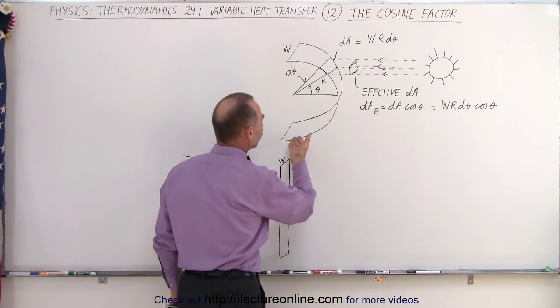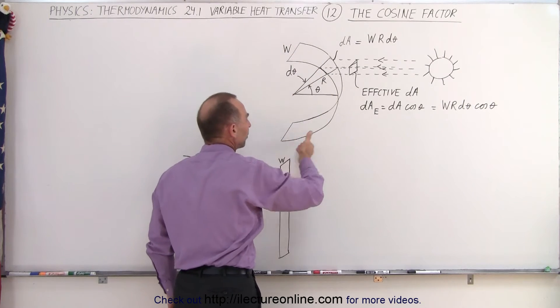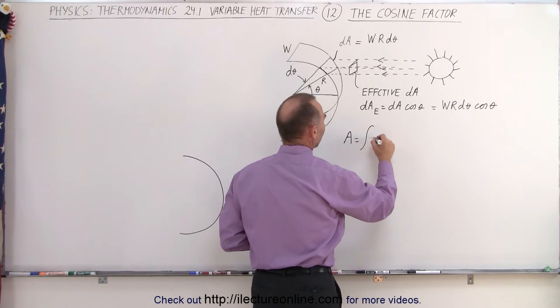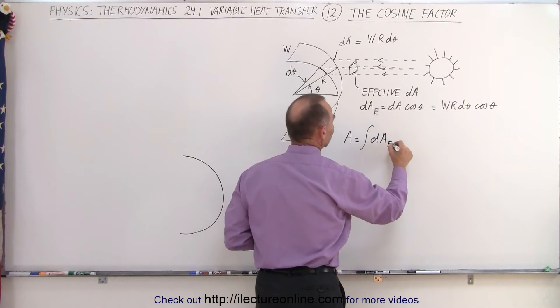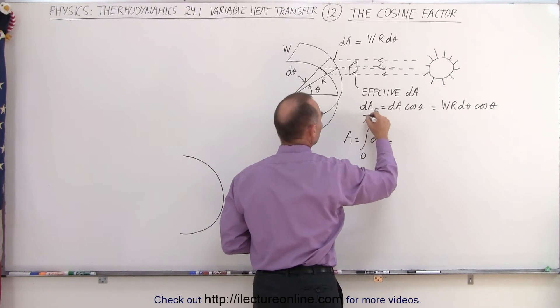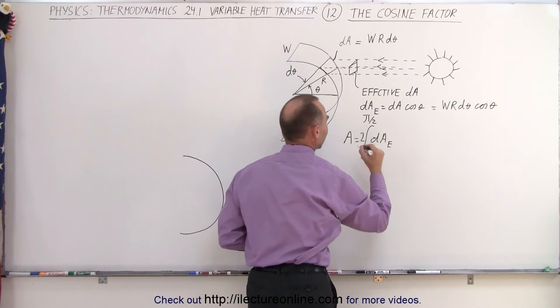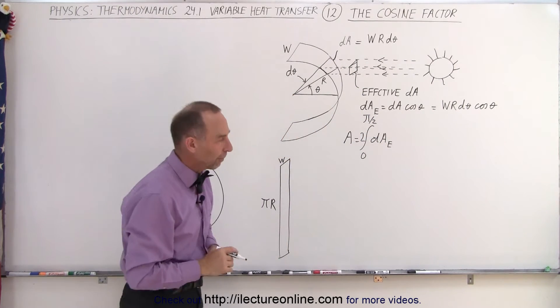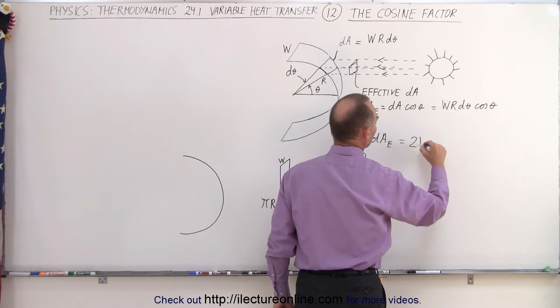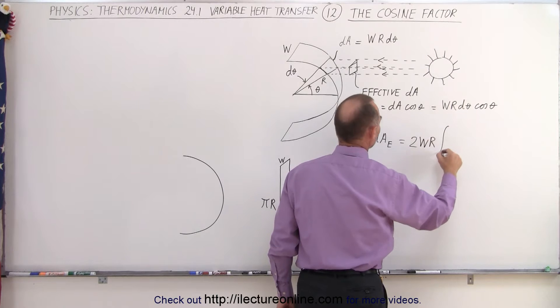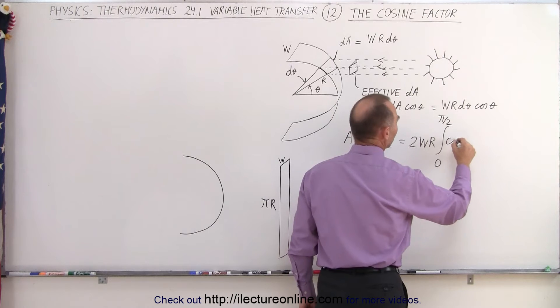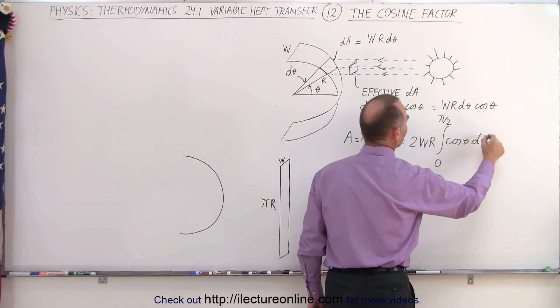And now if we want to then calculate the total radiation on that strip, what we need to then do is say that the area is going to be equal to the integral of the dA area, the effective area, from 0 to, let's say, pi over 2. And since that's only half the strip, we have to multiply times 2 to get the whole strip. So this is going to be equal to 2. Now these are constants, w times r, times the integral from 0 to pi over 2, which is 90 degrees, of the cosine of theta times d theta.